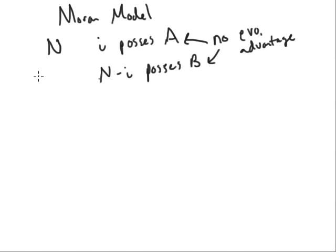So we're going to suppose that at a certain point in time there are i people with A and N minus i with B. And we randomly pick who will die, and we'll also randomly pick who will be born with a new allele.